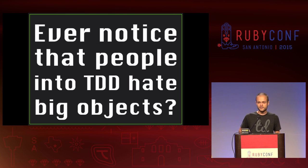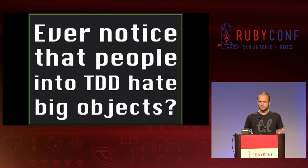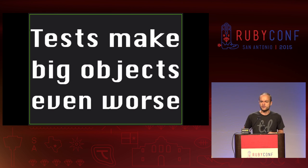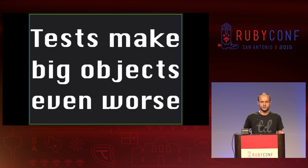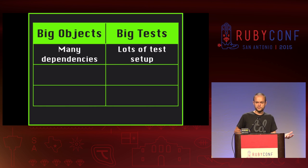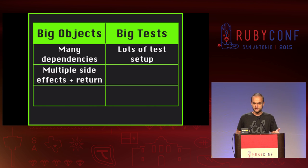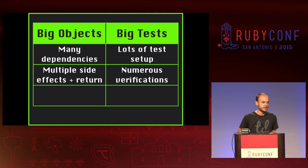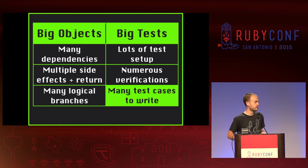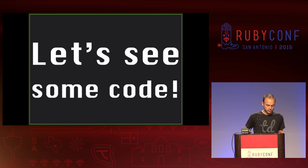Show me 'too big to fail.' People hate tests of big code. Have you ever noticed that people who were really into testing and TDD really seem to hate big objects and big functions more than normal people? Tests actually make big objects even harder to manage, which is counterintuitive. When you've got big objects, they might have many dependencies, which means you have lots of test setup. They might have multiple side effects, which means lots of verifications. But most interesting: they have lots of logical branches — depending on the arguments and the state, there are a lot of test cases you have to write. That's the one I think is most significant. Let's take a look at some code.